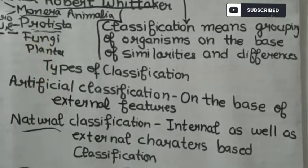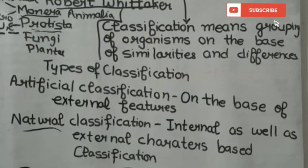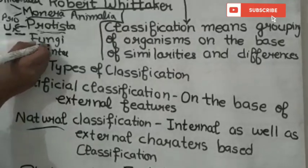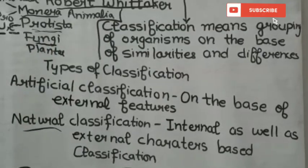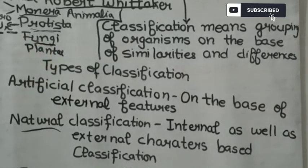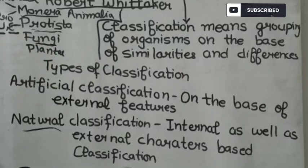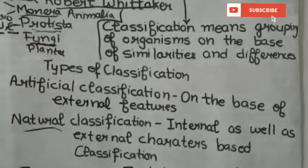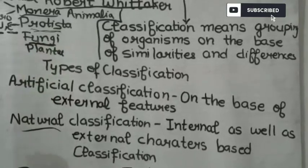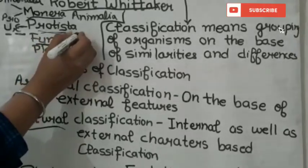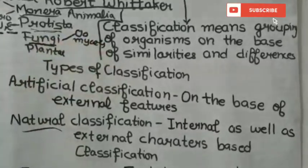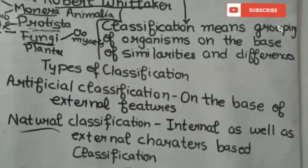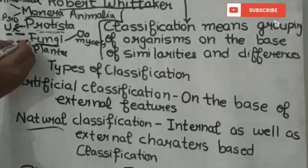In Kingdom Fungi, we discuss all fungi, such as Penicillium, Agaricus, and Puccinia. Kingdom Fungi is further divided into Oomycetes, Zygomycetes, Basidiomycetes, Ascomycetes, and Deuteromycetes.